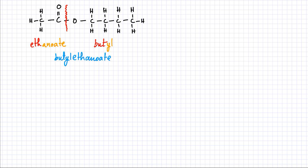I'm going to write 'butyl' first and 'ethanoate' second, so the name of this molecule is butyl ethanoate.